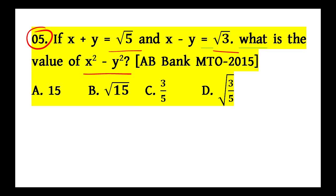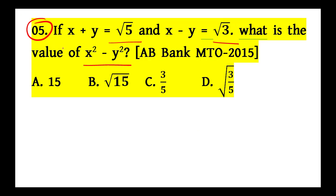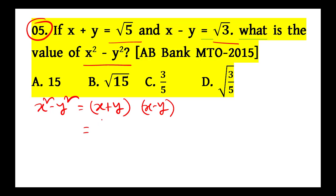Ata amra kibhabe samaadhan korbo? Sutrer madhomey shohajei samaadhan korbo. x squared minus y squared equals (x plus y) into (x minus y). That means root 5 into root 3. So the answer is root 15.